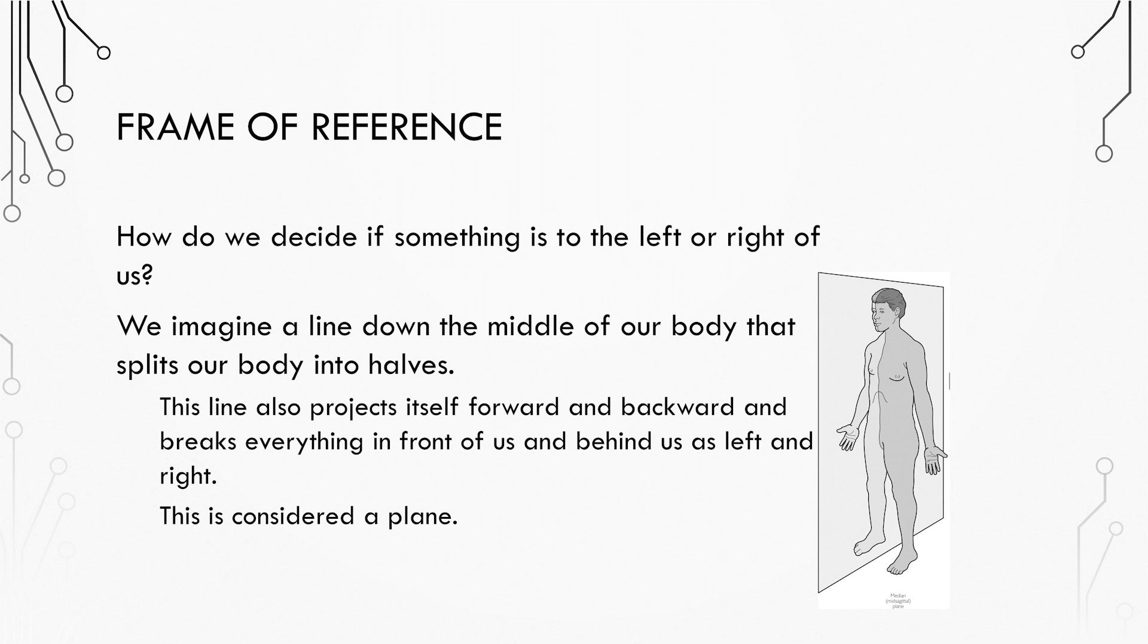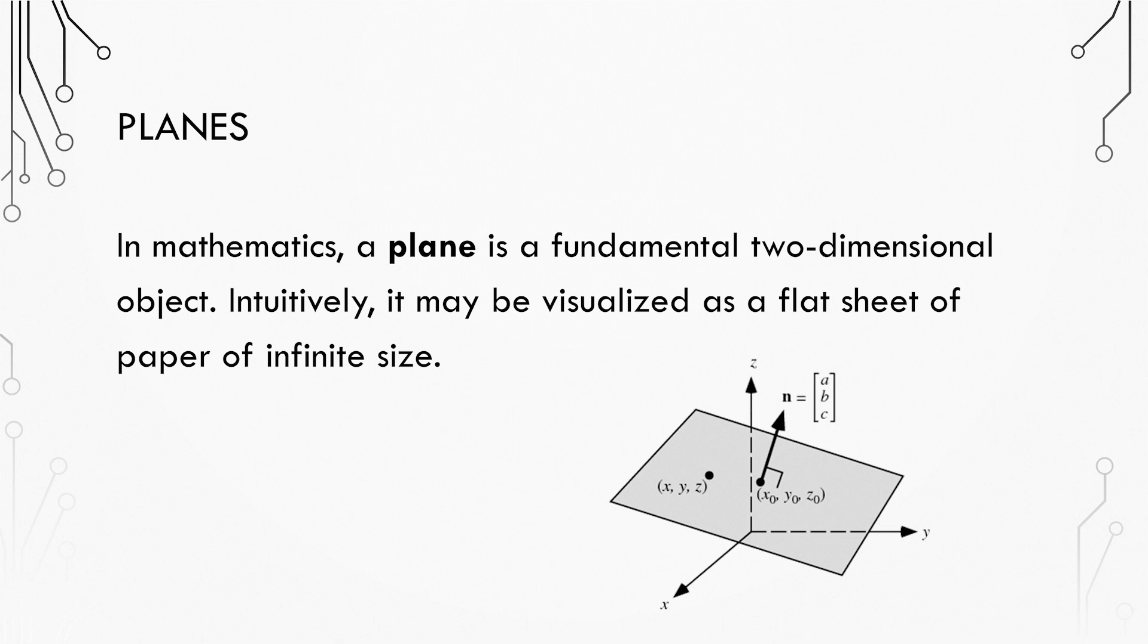To understand this, imagine a line going through the middle of your body extending forward and backward, splitting your body in half. This bisection is considered a plane.